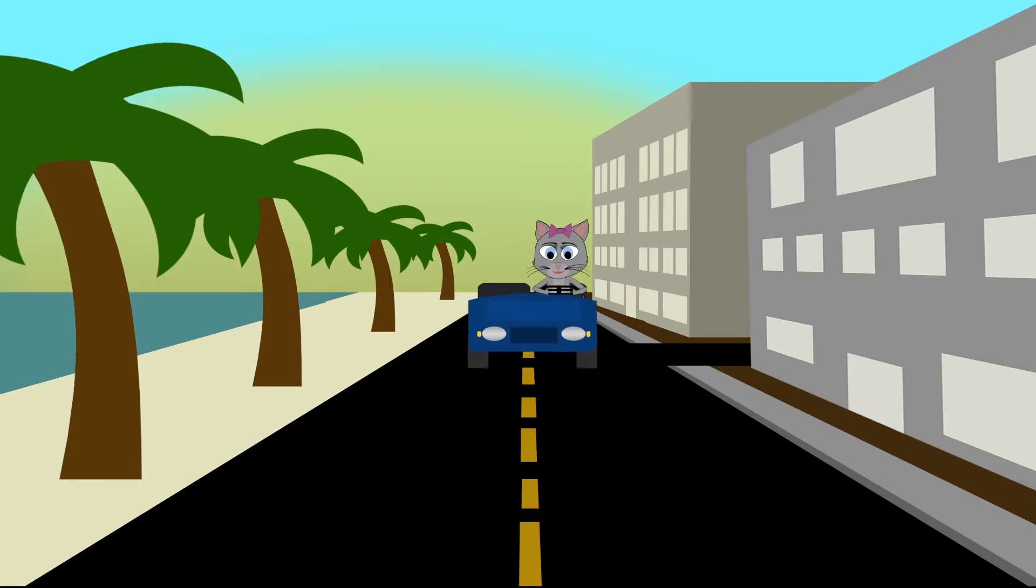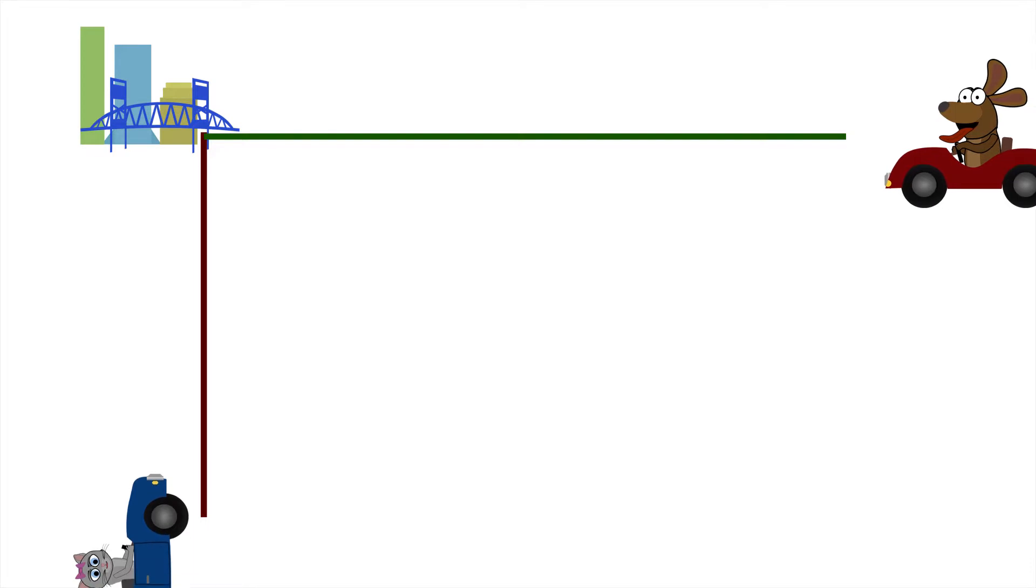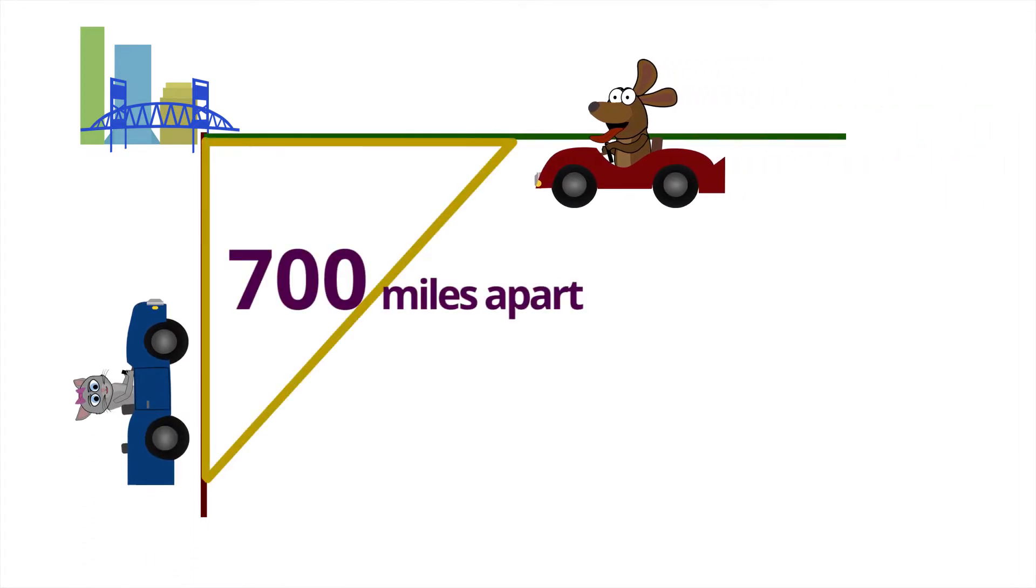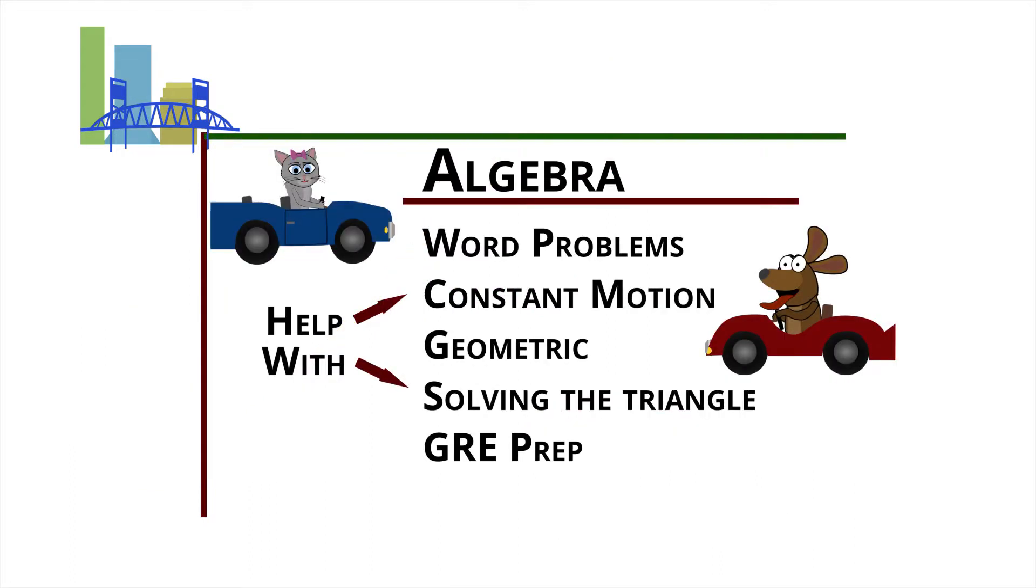Now the punchline here is how much time will elapse before these two cars are 700 miles apart. We need to realize at that moment their distances will be the measure of the hypotenuse of a right triangle. So not only do we have a constant motion problem, we also have a geometric problem all at the same time.